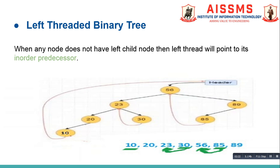As per the rule of left threaded tree, this thread should point to the inorder predecessor of the given node. To write the inorder sequence of a binary tree, we visit the nodes in order: left, root, right. Therefore, the inorder traversal of this binary tree is 10, 20, 23, 30, 56, 85, 89. Here, 10 does not have an inorder predecessor, so the left thread from 10 will point to the header. Node 30 does not have child nodes, so we create a left thread for it; its inorder predecessor is 23, so the left thread from 30 will point to 23. Similarly, 85 does not have any child node and its inorder predecessor is 56, so the left thread from 85 will point to 56.